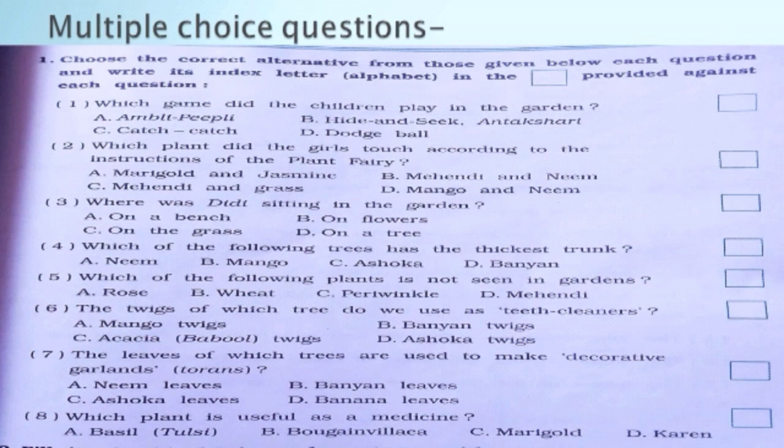Sixth question: the twigs of which tree do we use as teeth cleaners? Options are: mango twigs, banyan twigs, acacia (babul) twigs, ashoka twigs.